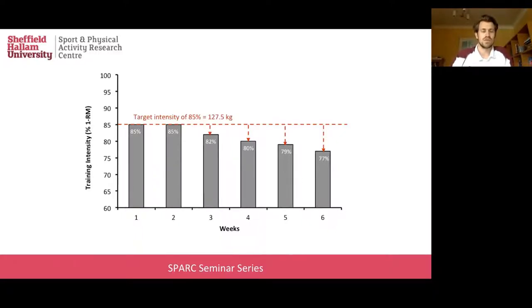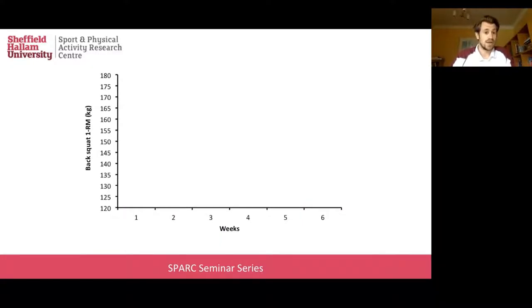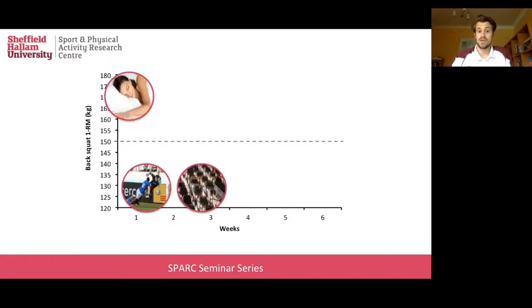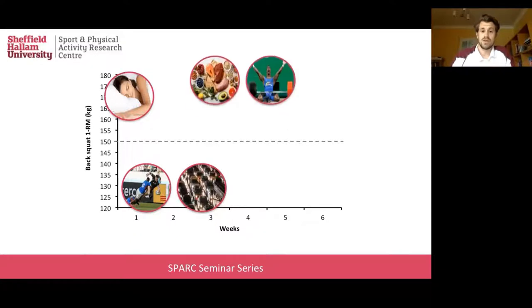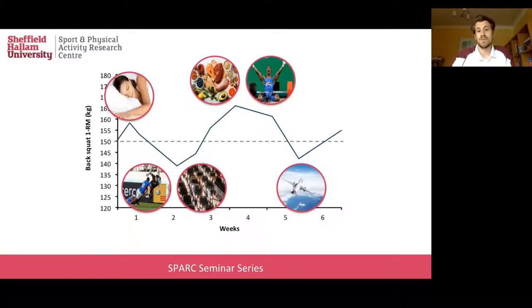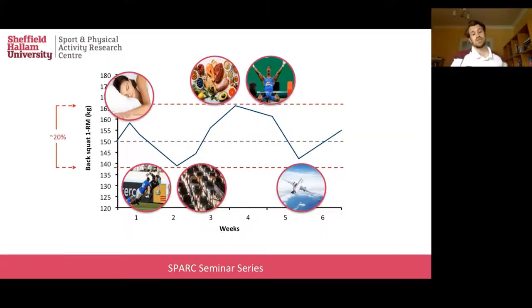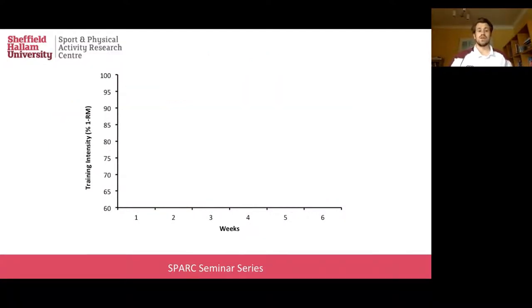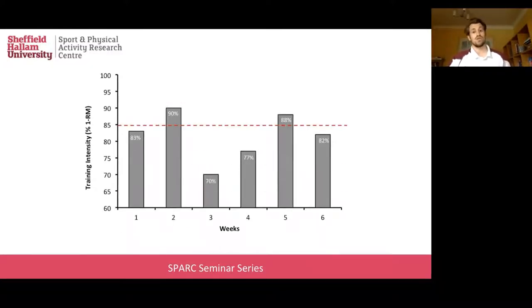If we then put this into a team sport context like a rugby athlete, and introduce confounding variables such as sleep, technical and tactical training, competition or fixture congestion, nutrition, resistance training, and travel, what we might find is that strength levels fluctuate quite a bit across the intervention. There is research — albeit tentative — showing upwards of a 20 percent fluctuation in 1RM from week to week. When we map that back to our example, we might find that we never actually hit that 85 percent training intensity target at any point.